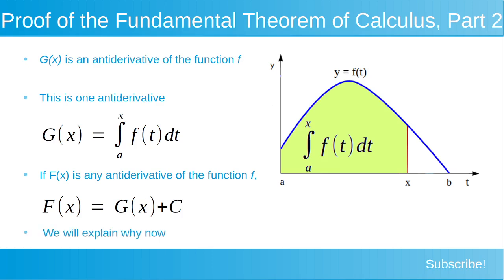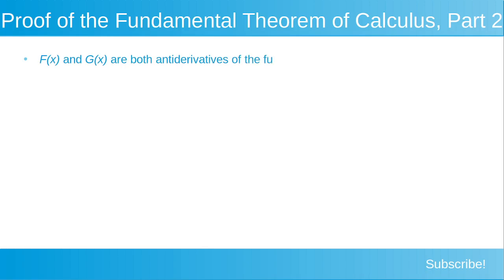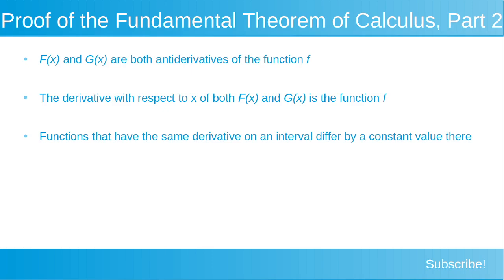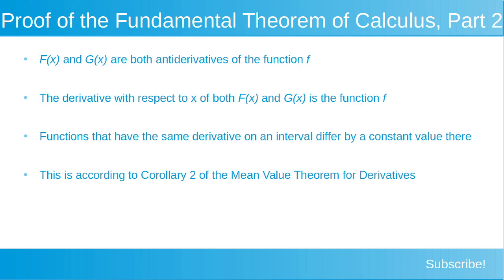We're going to explain why this is now. The functions capital F and capital G are both antiderivatives of the function f. The derivative with respect to x of both capital F and capital G is the function f. Functions that have the same derivative on an interval differ by a constant value there. This is according to corollary 2 of the mean value theorem for derivatives.